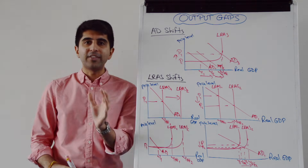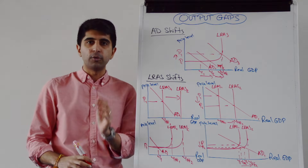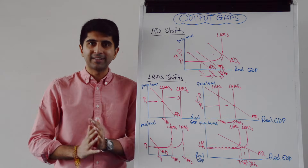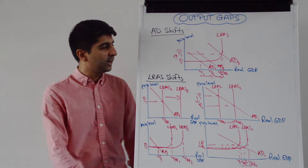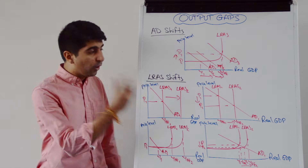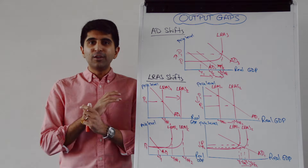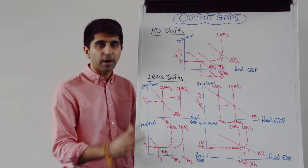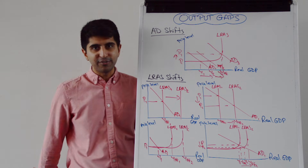So this is how you can use output gaps to evaluate the key conclusions that we come to whenever we shift AD or LRAS, and whenever we talk about the impacts on macroeconomic performance. Output gaps are always a fantastic evaluation tool for you to use. Hope that makes sense — hopefully now you can really nail the essays when you use output gaps. I will catch you all in the next video.